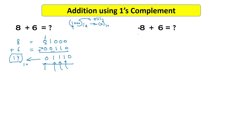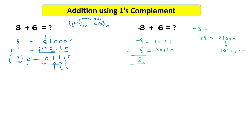Let's take another example: add minus 8 and 6. For minus 8, first write positive 8 as 01000, then flip the bits to get 10111, which represents minus 8. The value of 6 is 00110 since it is positive. In normal mathematics, minus 8 plus 6 should give minus 2. Adding them: 1 and 1 is 0 carry 1, 1 and 1 is 0 carry 1, and so on through the bits.